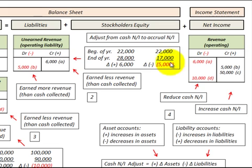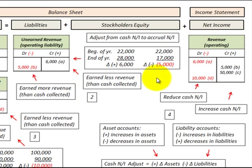Now in the case where we had a reduction in unearned revenue by five thousand dollars, we debit unearned revenue for that amount. This is where we earned more revenue than the cash that was collected, so our credit goes to the revenue account. We increase our cash net income because we earned more revenue than the cash collected.